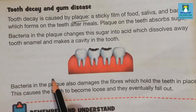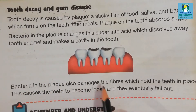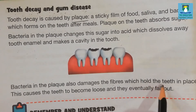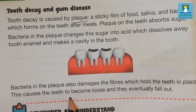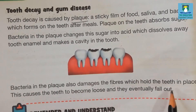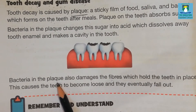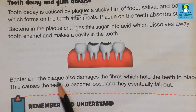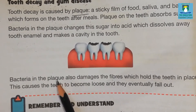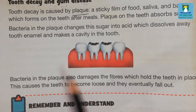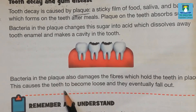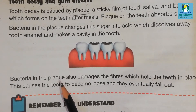Bacteria in the plaque also damages the fibers which hold the teeth in place. This causes the teeth to become loose and eventually fall out. The bacteria present in plaque can damage these fibers, leading to loosening of teeth and eventually their falling out.